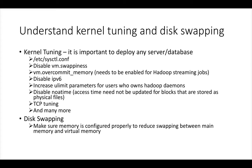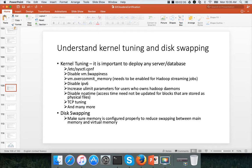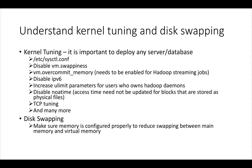Now we will try to understand kernel tuning and disk swapping. For kernel tuning, you have to update the sysctl.conf file. You have to make sure that VM.swappiness is disabled so that swap space is not used while processing data, as it can impact performance significantly. Over-commit memory has to be enabled for Hadoop streaming jobs. You have to disable IPv6 and increase ulimit parameters for users running Hadoop daemons such as HDFS, MapRed, and YARN.